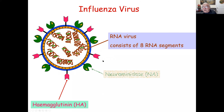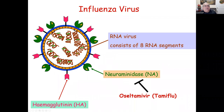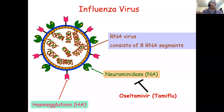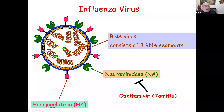Let's start with the neuraminidase. One way is to develop drugs to inhibit the neuraminidase. One drug called Oseltamivir, or Tamiflu, which is an inhibitor of the neuraminidase. There are other drugs which can target the hemagglutinin as well.